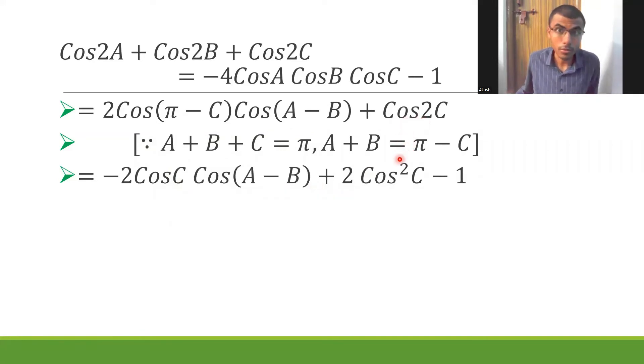So -2cosC cos(A-B). What is the formula of cos2C? It's 2cos²C - 1. Cos2A is 2cos²A - 1, so cos2C is going to be 2cos²C - 1. Now let's go ahead.